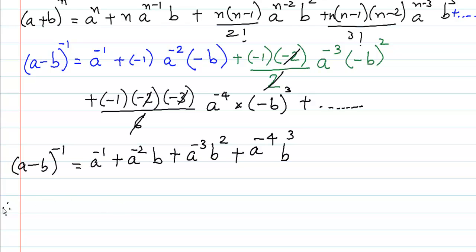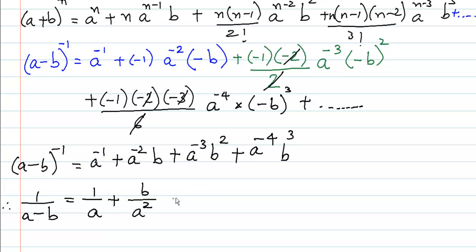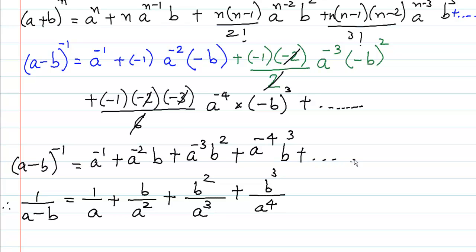So the final result is: 1/(a - b) = a^(-1) + a^(-2)·b + a^(-3)·b² + a^(-4)·b³ + ... which can be rewritten as 1/a + b/a² + b²/a³ + b³/a⁴ + ... and so on. This is the infinite expansion of 1/(a - b).